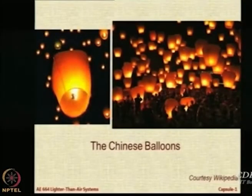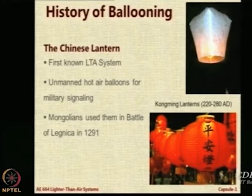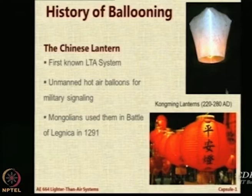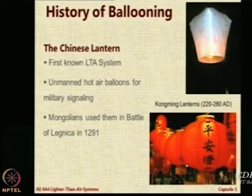Let us look at the first period. It started with the Chinese balloons — we are all aware of these lanterns, seen in all festivals including tech fests, with many instances of lanterns being lit up in the sky. This is the most primitive LTA system. The first known LTA system, if we set aside undocumented information, is the Chinese lantern. The main application they found for it was signaling during military operations, and the Mongolians used it in some kind of battle in 1291.